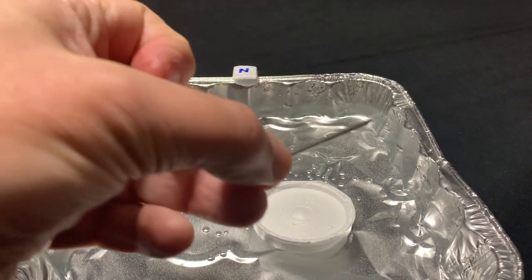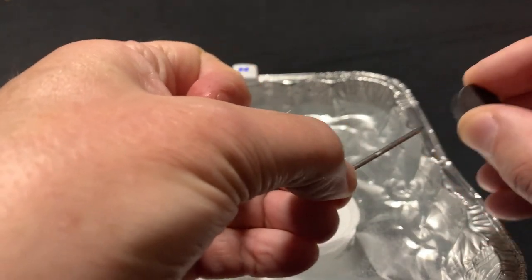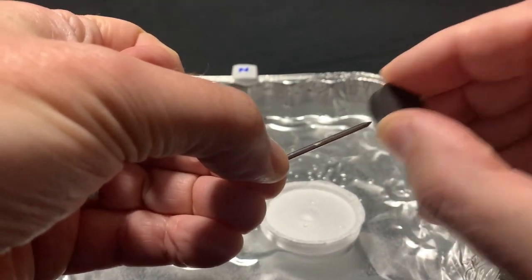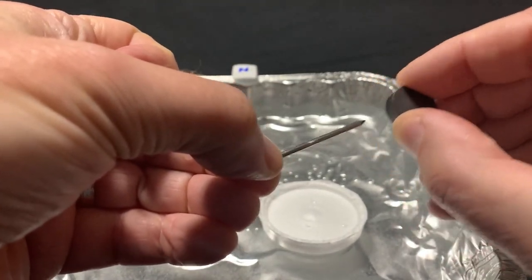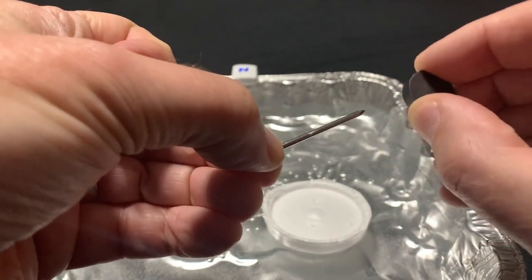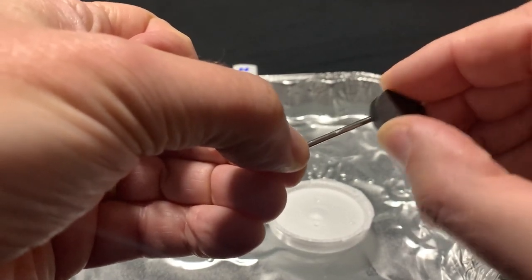Now you hold the nail or the needle in one hand and you rub the magnet, moving in the same direction on the tip of the needle about 50 times, and this will magnetize the tip of the needle.